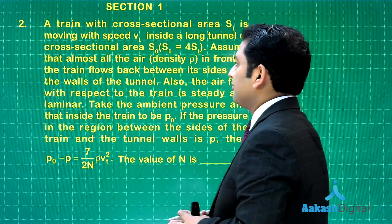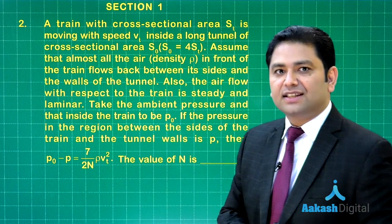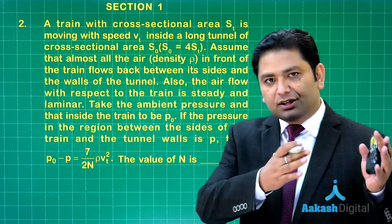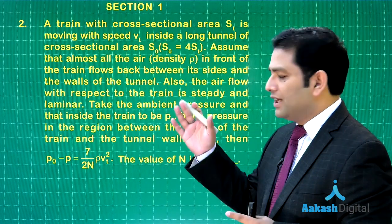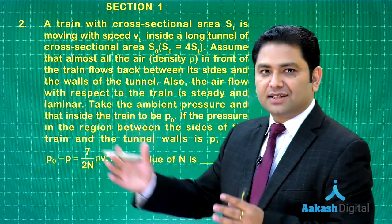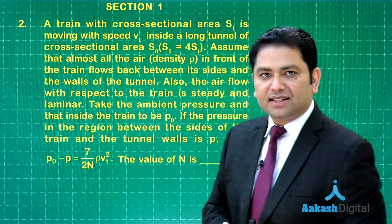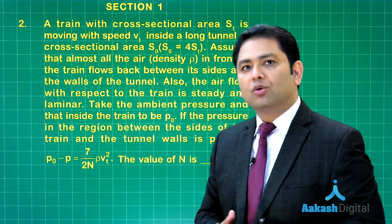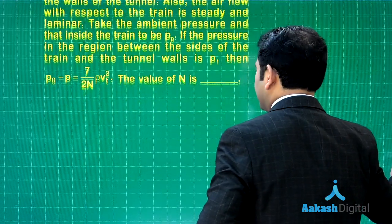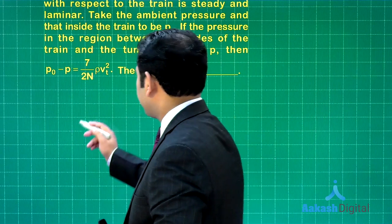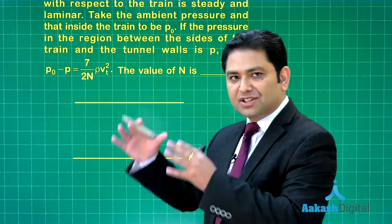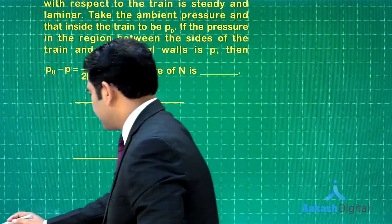There is a train passing through a long tunnel. The train has a speed vt and the cross-sectional area of the tunnel is 4 times the cross-sectional area of the train. As the train passes through the tunnel, we need to calculate the difference in pressure between two points.